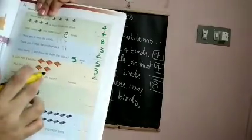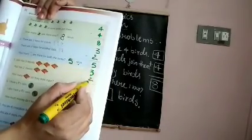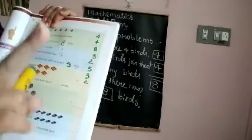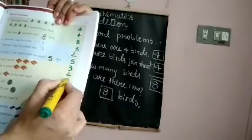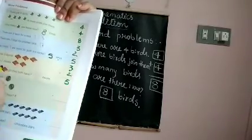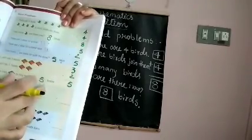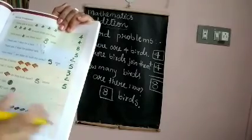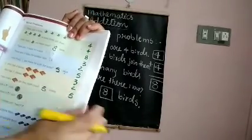How many books do they both have together? Three plus two: keep three in your mind, two in your hand — three, then four, five. So they have five books together. Write five in the box. This is how you add and find the total. Write the numbers given in the boxes, add them, and write the answer. The remaining two sums, do on your own.